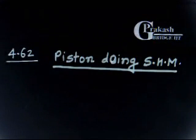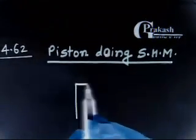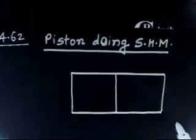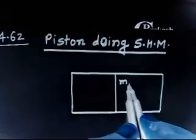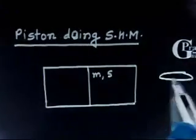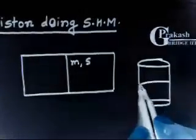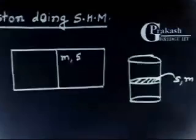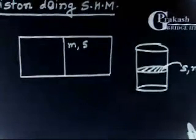Let us discuss the next problem. We have a cylinder with a piston in the middle that divides it. The mass of the piston is m and the cross-sectional area of the piston is S. In three dimensions, the cylinder has a piston with area S and mass m. The piston and cylinder system has been kept horizontal.